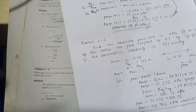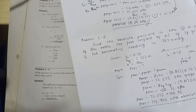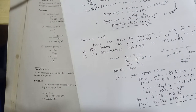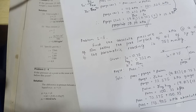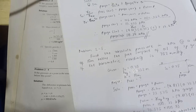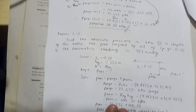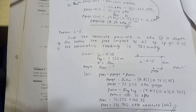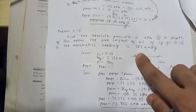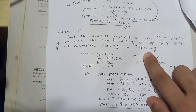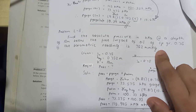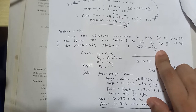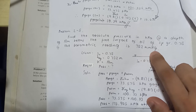Proceeding to Problem 5: find the absolute pressure in kilopascal at a depth of 10 meters below the free surface of oil with specific gravity 0.85, if the barometer reading is 752 millimeters of mercury.